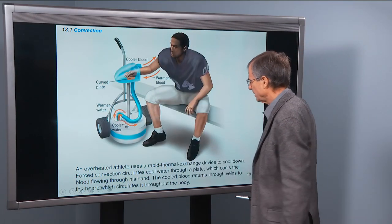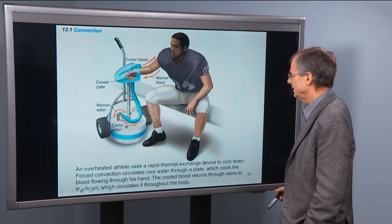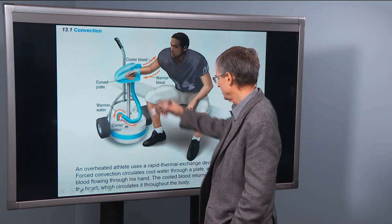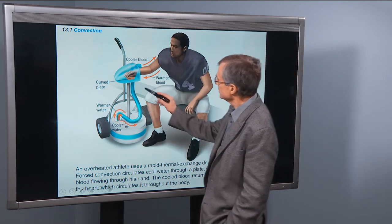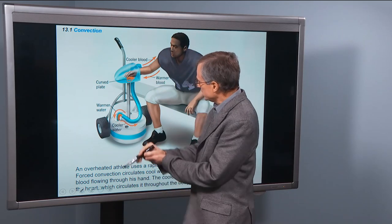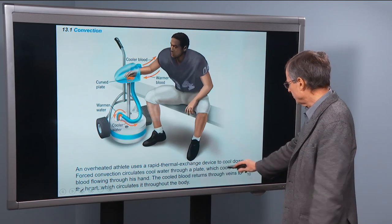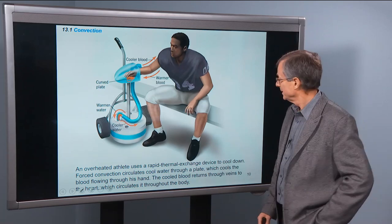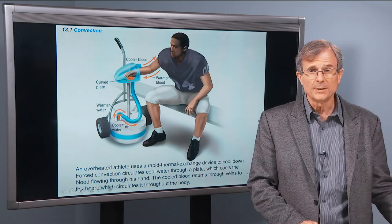An overheated athlete uses a rapid thermal exchange device to cool down. Forced convection circulates this cooled water through a plate, which cools the blood flowing through his hand. So here's his plate, this plate that is cold, and it's going to cool his hand down. And the cool blood returns through his veins to the heart, which circulates it through. I've never seen one of these before, but it was a cool little application in your textbook.